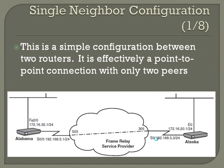Single neighbor configuration is a simple setup between two routers — effectively a point-to-point connection with only two peers. Here's our network: we've got the Alabama router and the Alaska router, each with a serial interface, and a single PVC built between them — DLCI 503 on one end and 305 on the other.